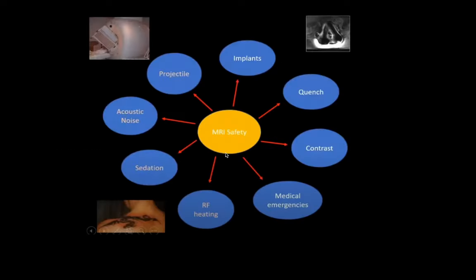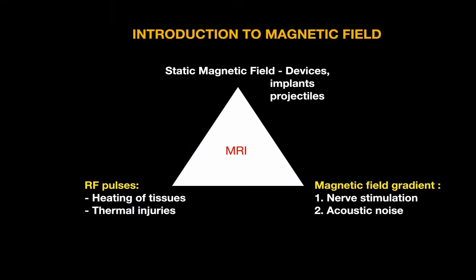MRI safety is divided into implants, quench, contrast, medical emergencies in MRI, RF heating, sedation, acoustic noise, and projectiles. Magnetic field can be divided into three parts: static magnetic field, magnetic field gradients, and radiofrequency pulses. Static magnetic field can cause device implant or projectile-type injuries; magnetic field gradients can cause nerve stimulation or acoustic noise; and radiofrequency pulses can cause heating of tissue and thermal injuries.